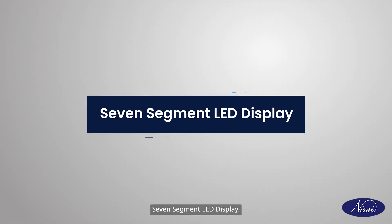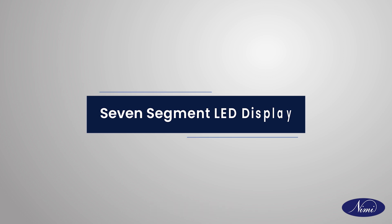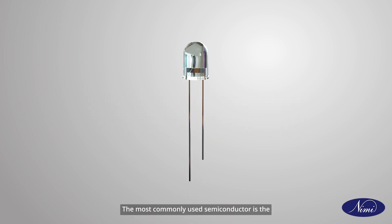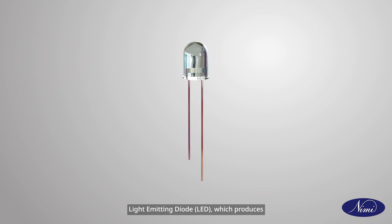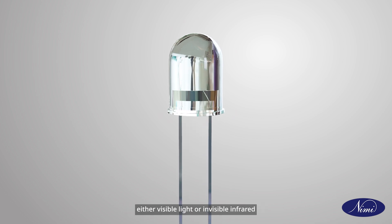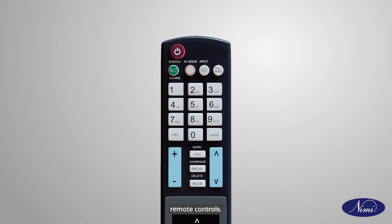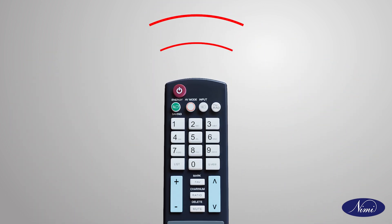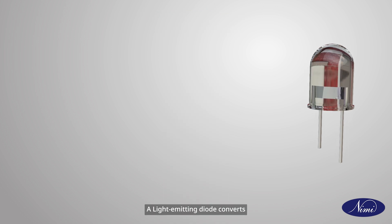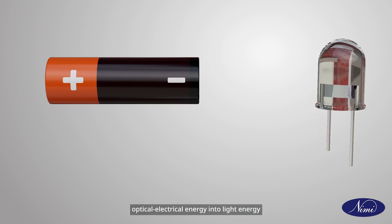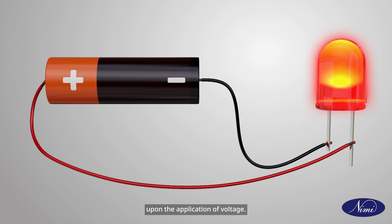Seven segment LED display. The most commonly used semiconductor is the light emitting diode (LED), which produces either visible light or invisible infrared light when it is forward biased. Invisible light is emitted by devices like remote controls.